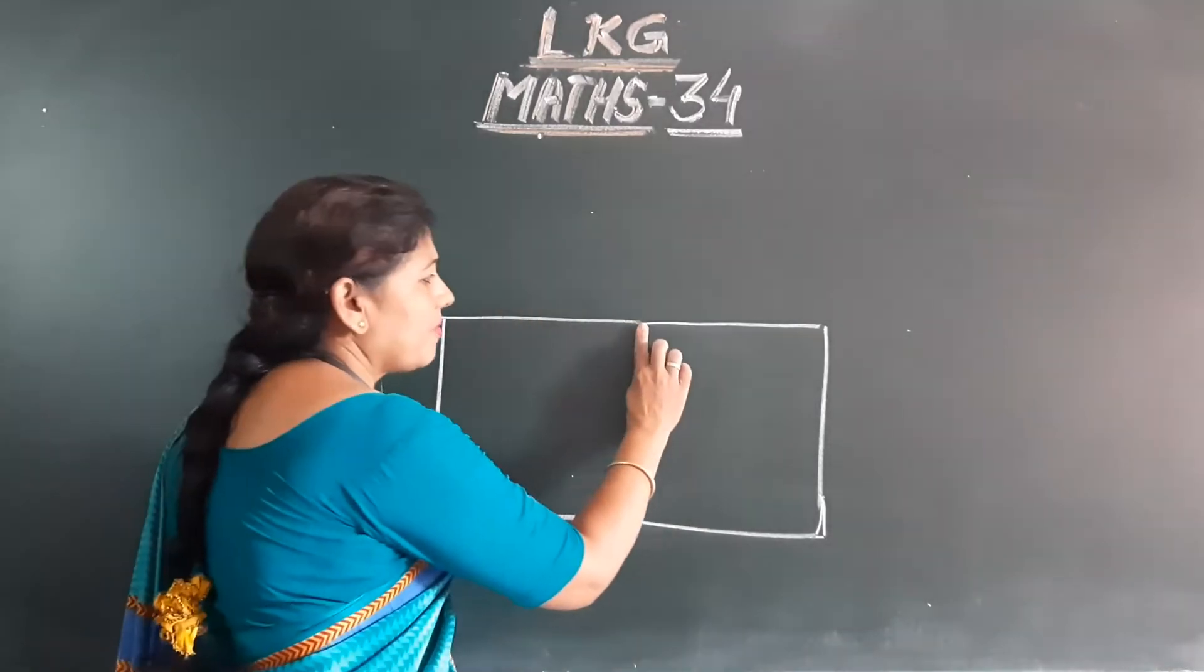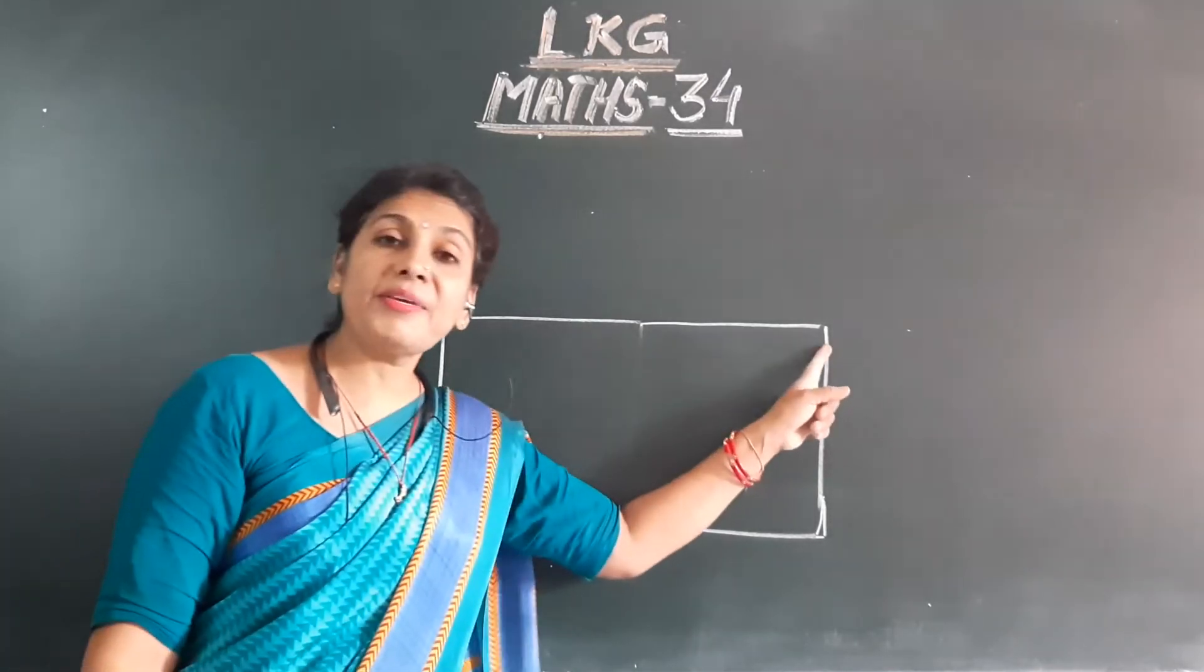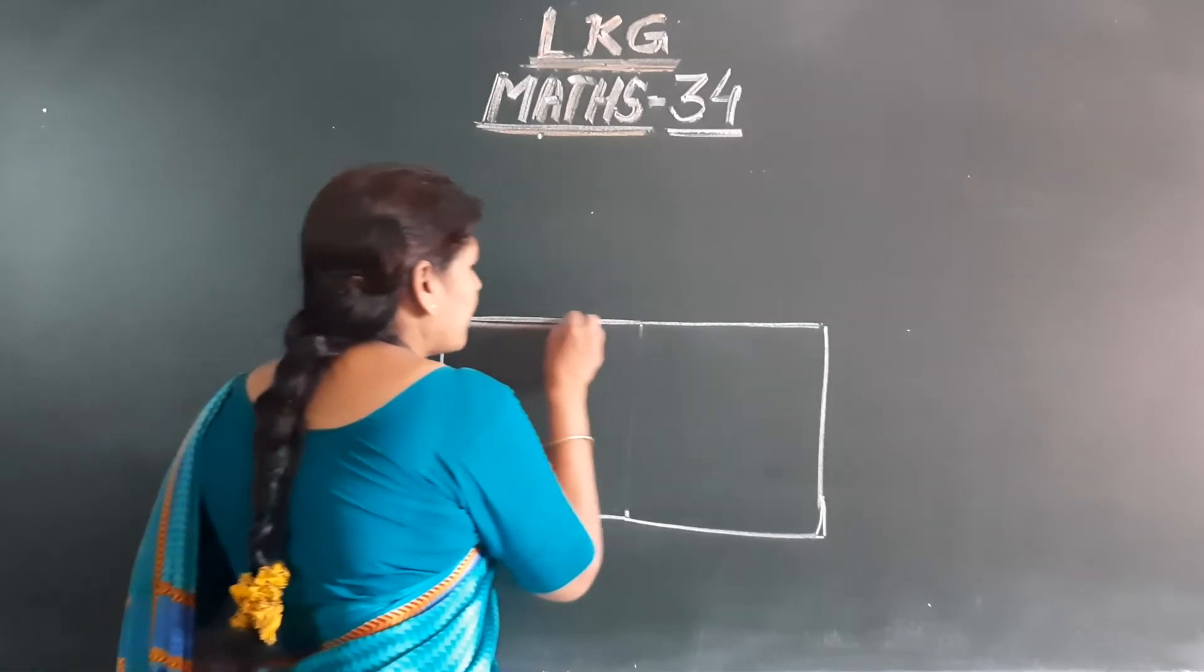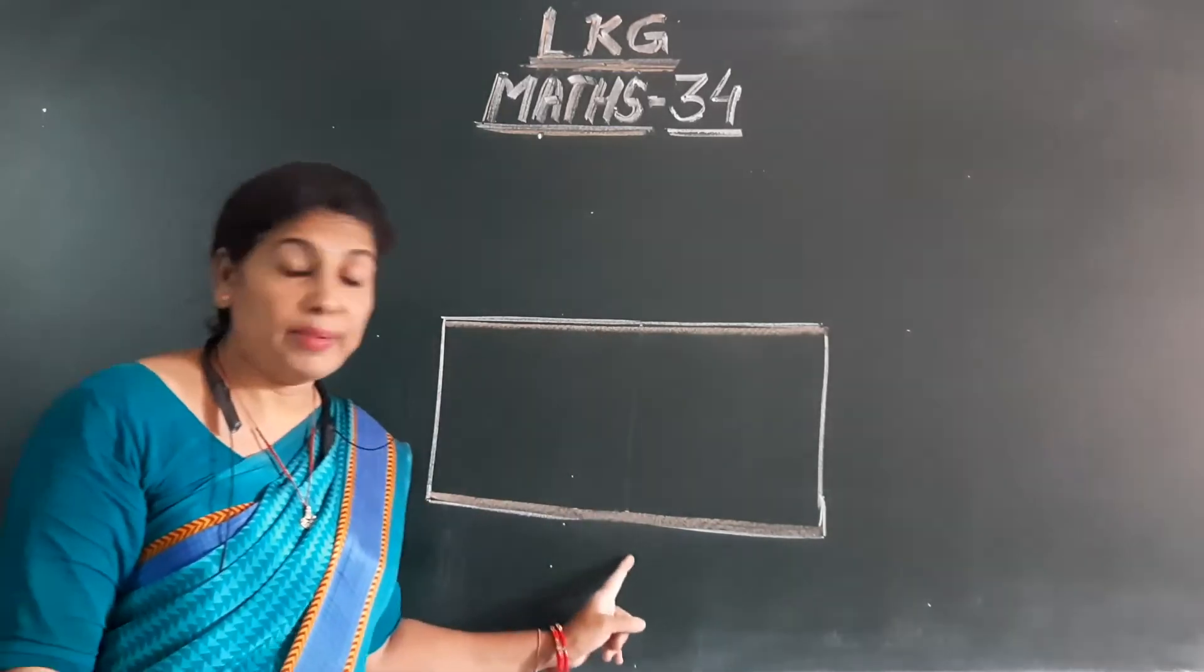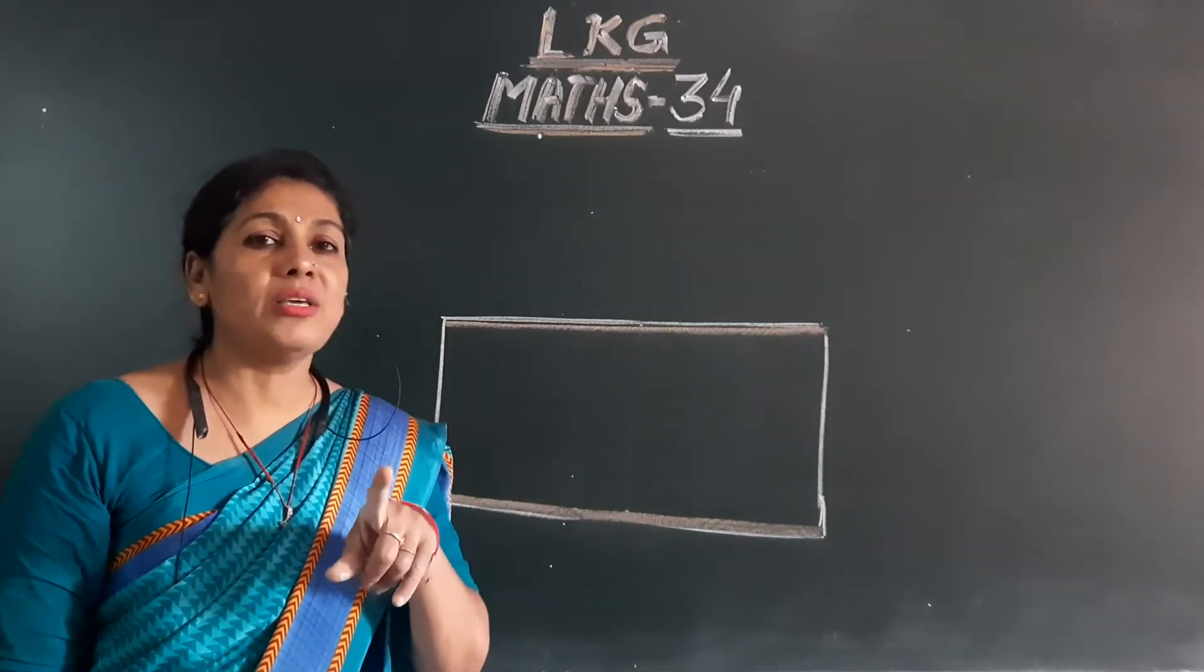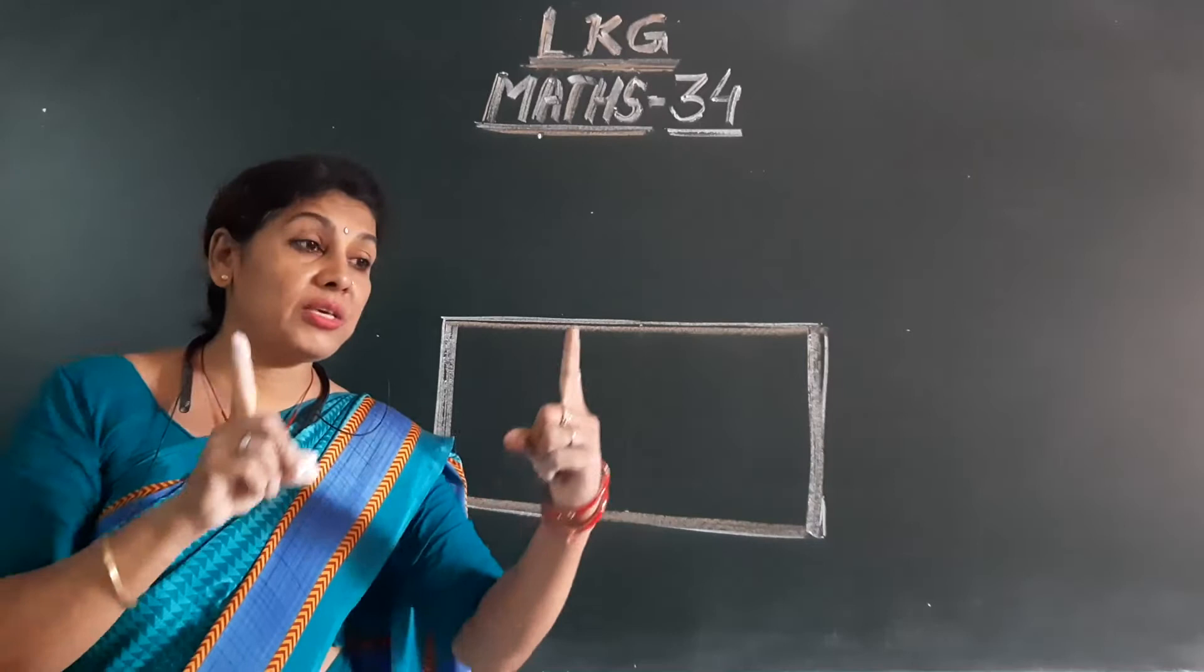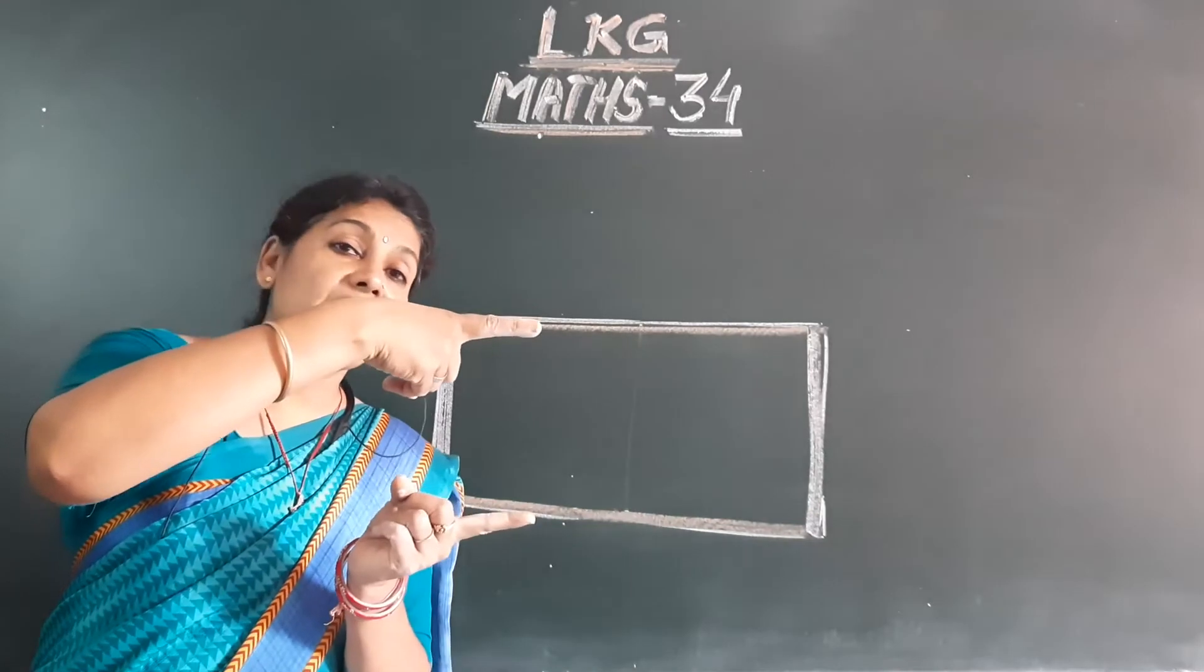But if we will remove this line and make a rectangle, now what is it? This line is equal to this line, and this line is equal to this line. This side line and this side line - these two are equal.